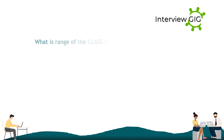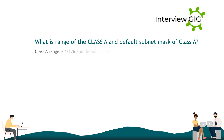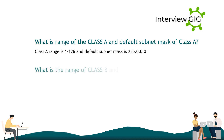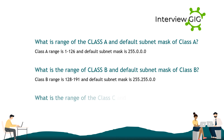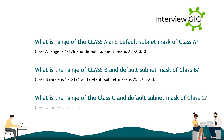What is the range of Class A and its default subnet mask? Class A range is 1–126 and default subnet mask is 255.0.0.0. What is the range of Class B and its default subnet mask? Class B range is 128–191 and default subnet mask is 255.255.0.0.